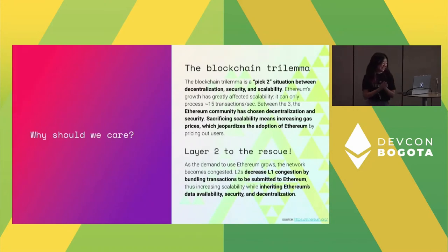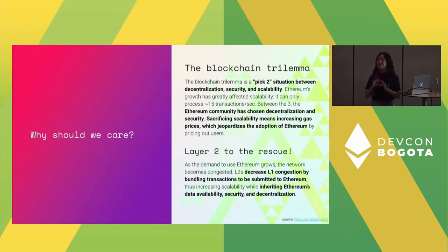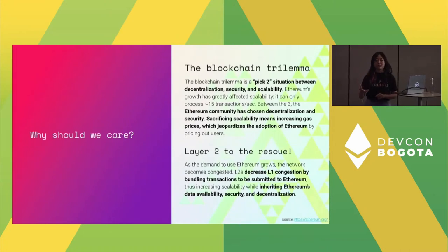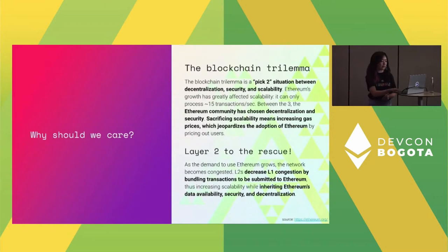The definition of a layer two is to decrease L1 congestion by bundling up transactions and submitting them to Ethereum. Things to note: it gets its data availability from Ethereum, specifically deriving its security from Ethereum and helping us maintain that decentralized aspect.